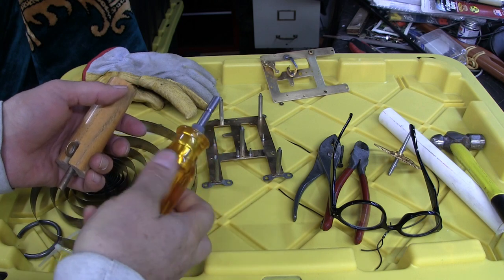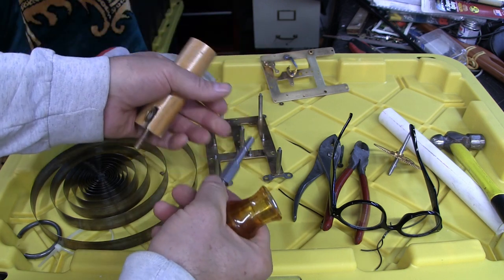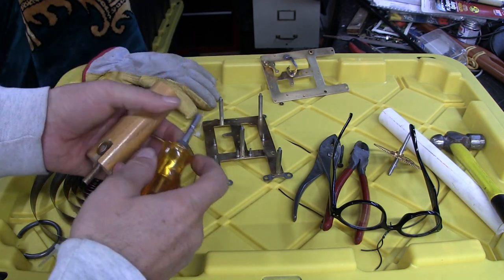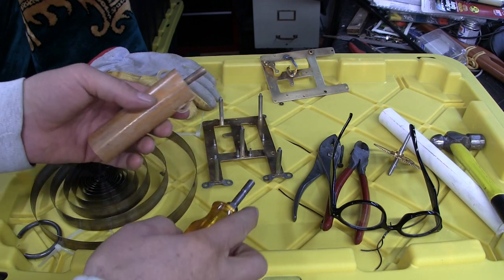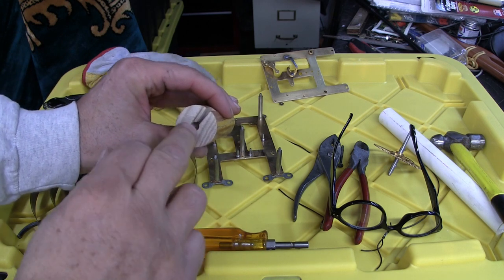It has interchangeable bits depending on the size of the winding arbor, but you can make your own. It's very simple - just a piece of wood with a hole drilled in it and a slot cut in it for the key to be held firmly and snugly there.